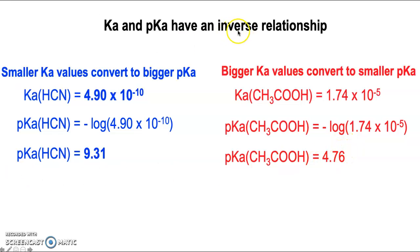It's what we call an inverse relationship. So smaller Ka's convert to bigger pKa's. You can notice that that is a bigger value because you've got a smaller Ka. While bigger Ka's produce smaller pKa's. You will need to know this relationship because you could get a question that asks you about acid strength and they give you the pKa values.